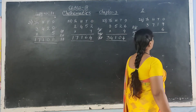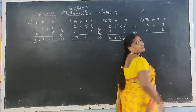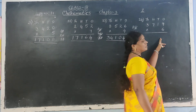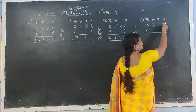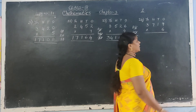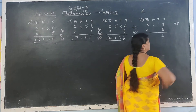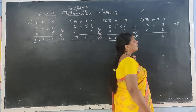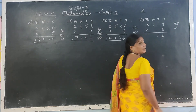Next: 24th sum. 3,719 into 6. Multiply with 6. Read the 6 table now. 6 nines are 54. Write 4 in answer, carry 5. Next: 6 ones are 6. 6 plus 5 is 11. Write 1 in answer, carry 1.